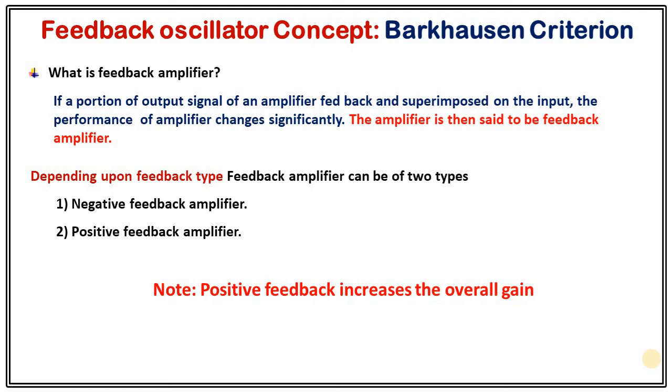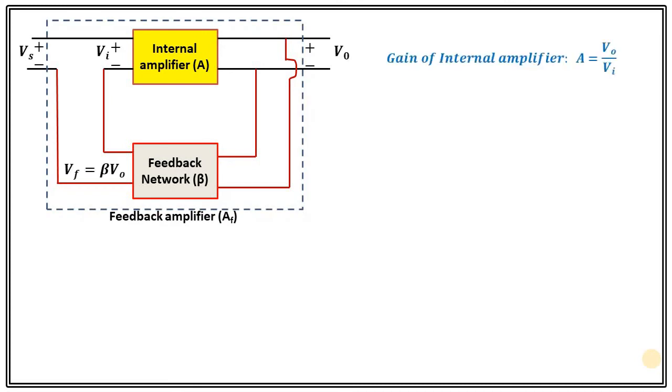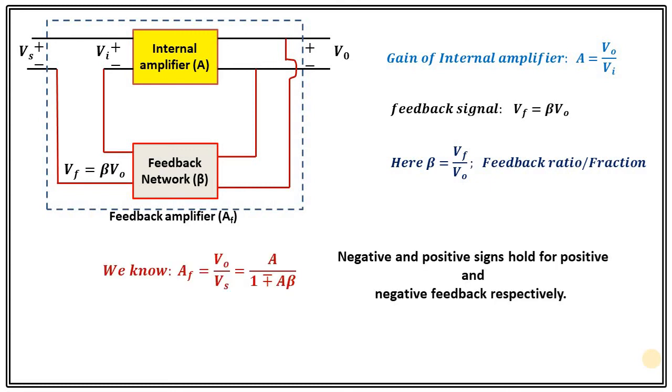So let's start from here. This is our internal amplifier. There is a feedback network. So this whole setup constitute feedback amplifier and here if the gain of internal amplifier is A then A equals V0 by VI and feedback signal will be beta V0. Beta is the feedback fraction and we have derived this relation that the gain for overall feedback network is given by AF which is equal to A upon 1 minus or plus A beta.